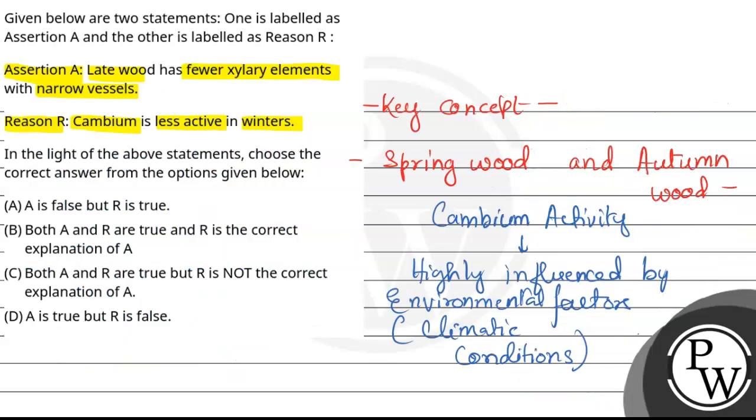According to the question, the assertion states that late wood has fewer xylary elements with narrow vessels. This statement is correct. The reason states that cambium is less active in winter, which is also correct. Therefore, the correct answer is option B: Both assertion and reason are true, and reason is the correct explanation of assertion. I hope you understood it well. Best of luck.